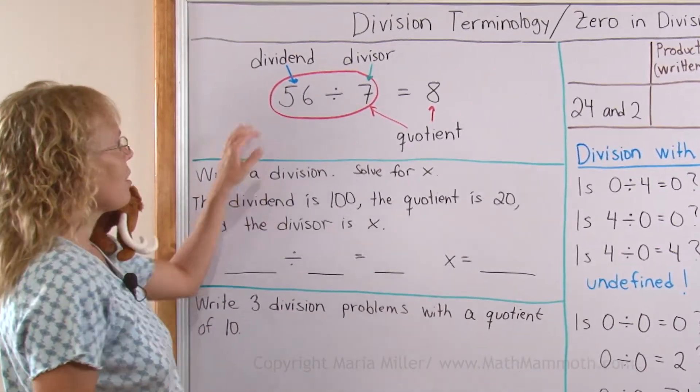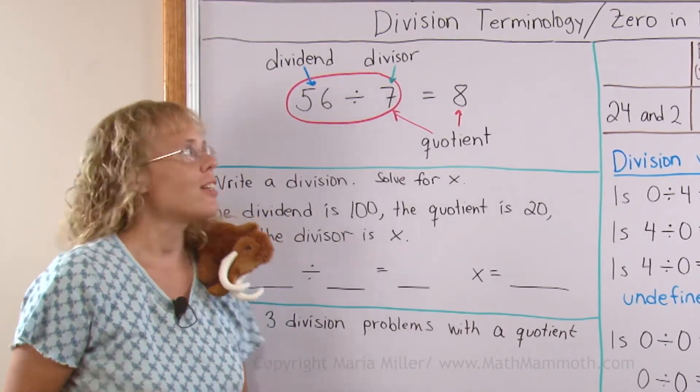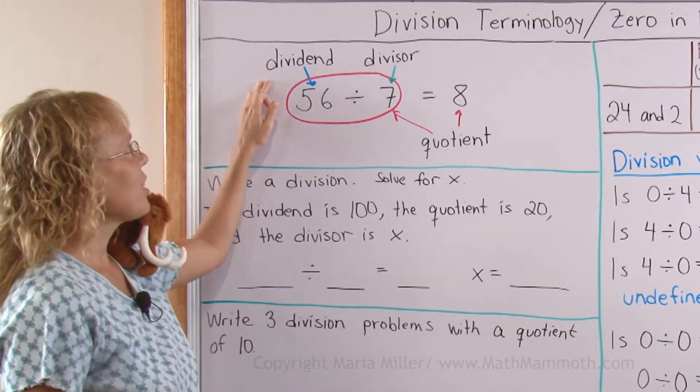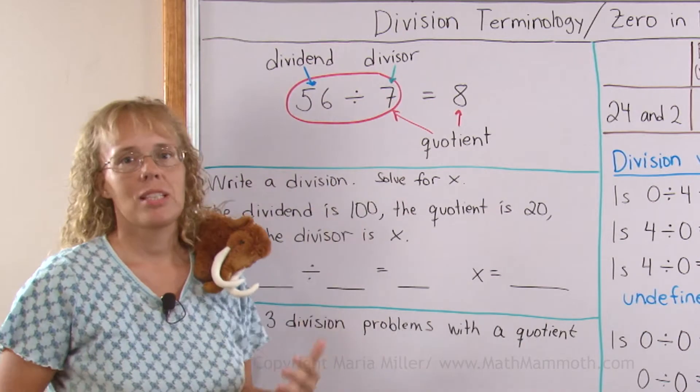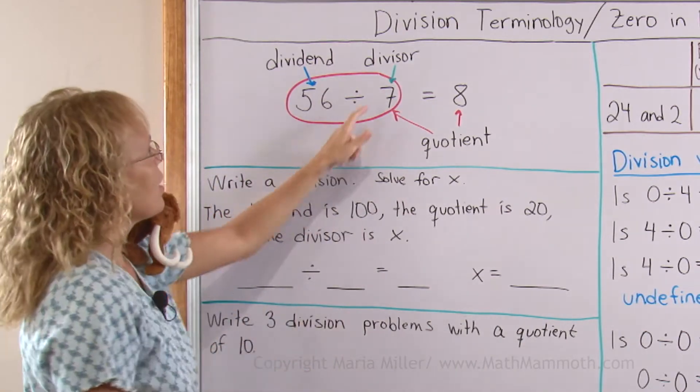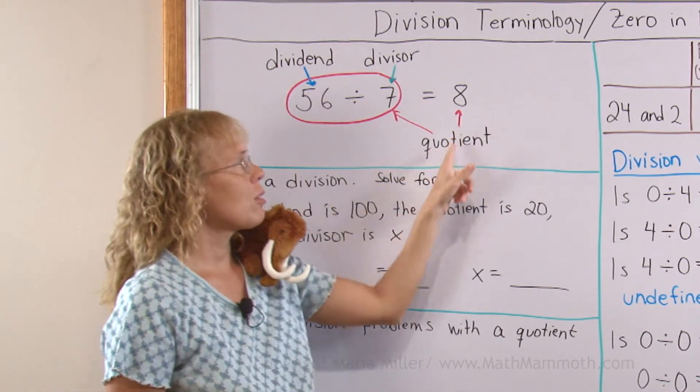I've written the terms for division here. First of all we have the dividend which is the number we are dividing. Then divisor is the number that is doing the dividing. Here this number and then the answer is called the quotient.